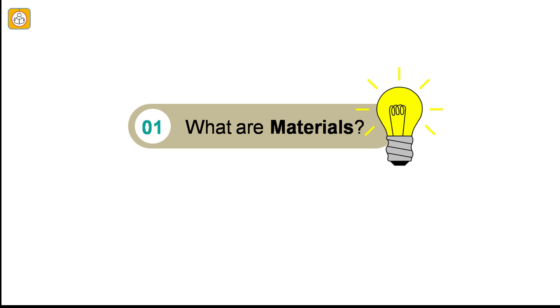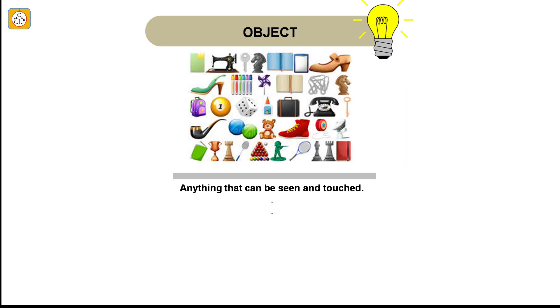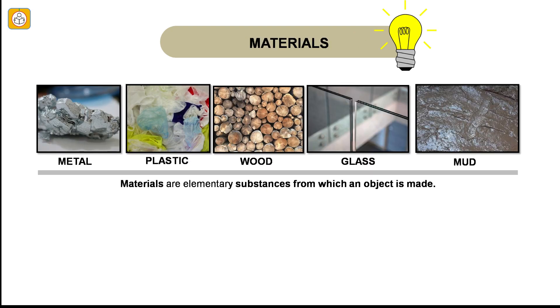Question number 1: What are materials? Before we discuss what we mean by material, let us define what an object is. An object is anything that can be seen and touched. Now coming to materials. Materials are elementary or basic substances from which an object is made. Metal, plastic, wood, glass, mud are some examples of materials.